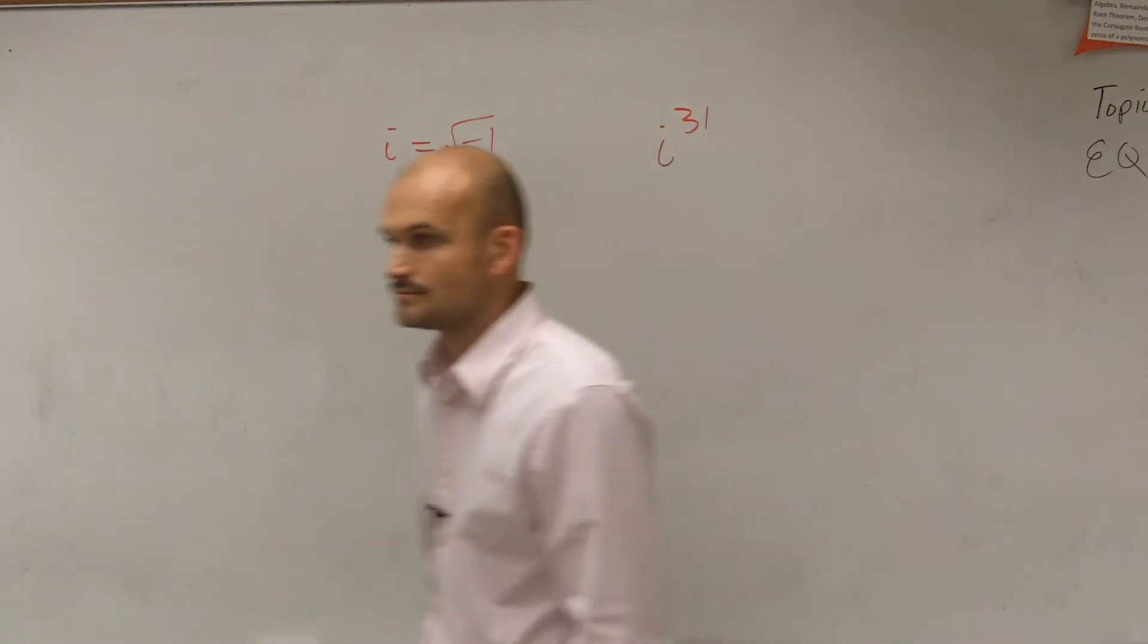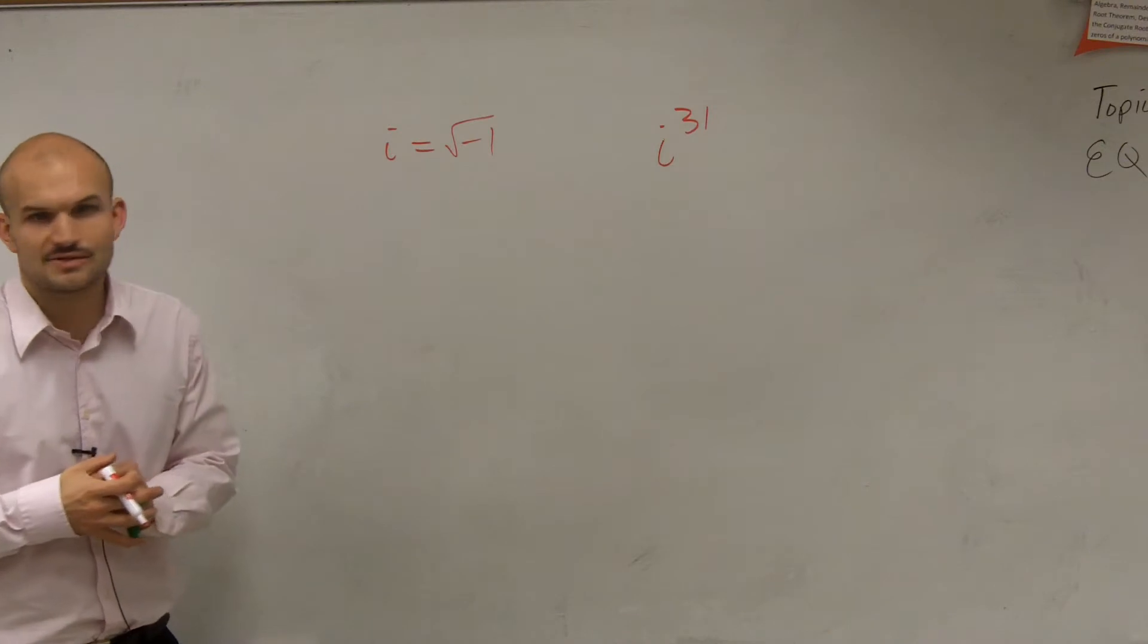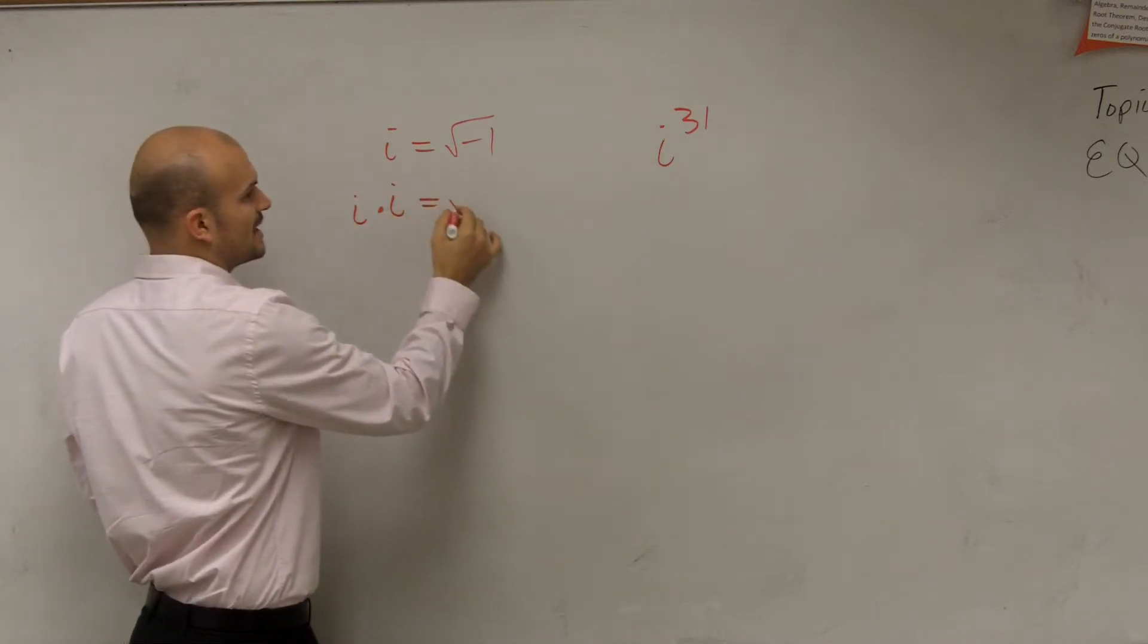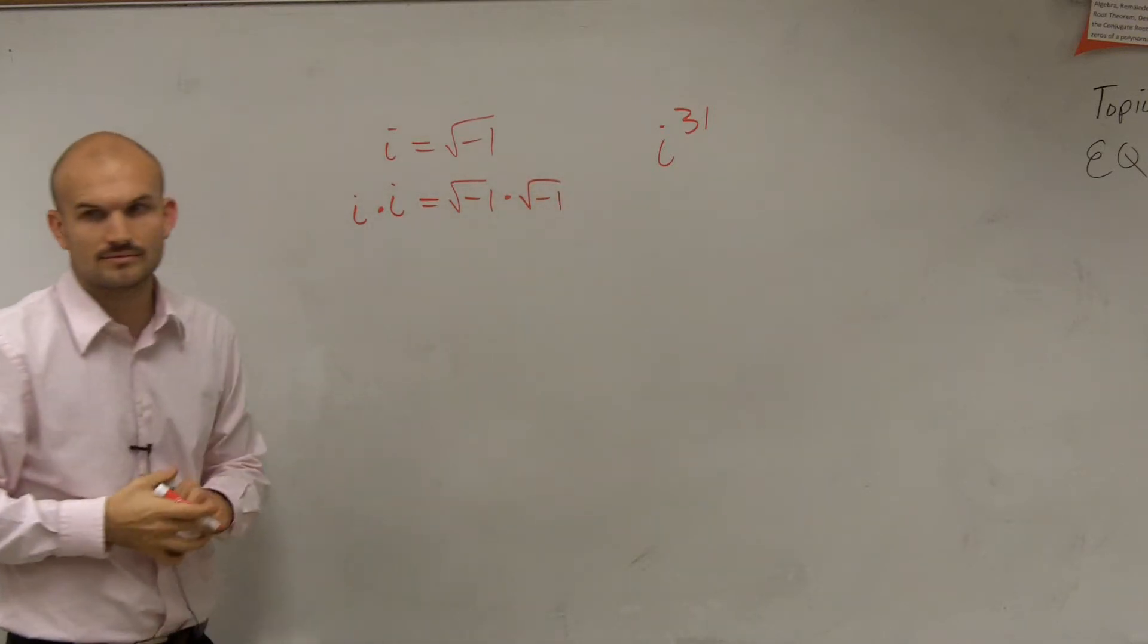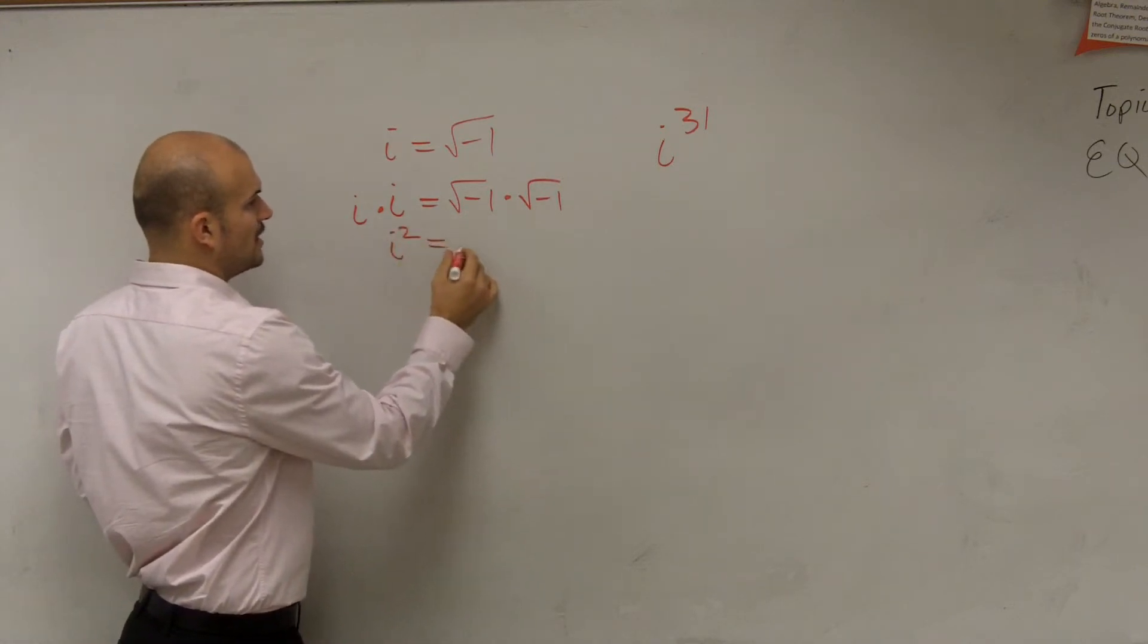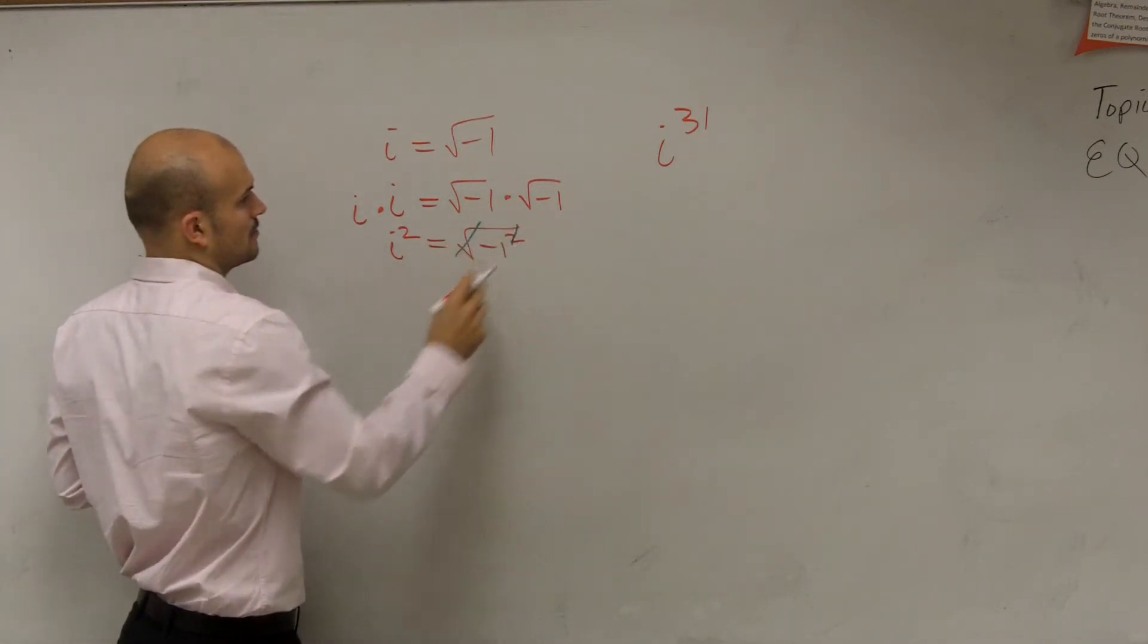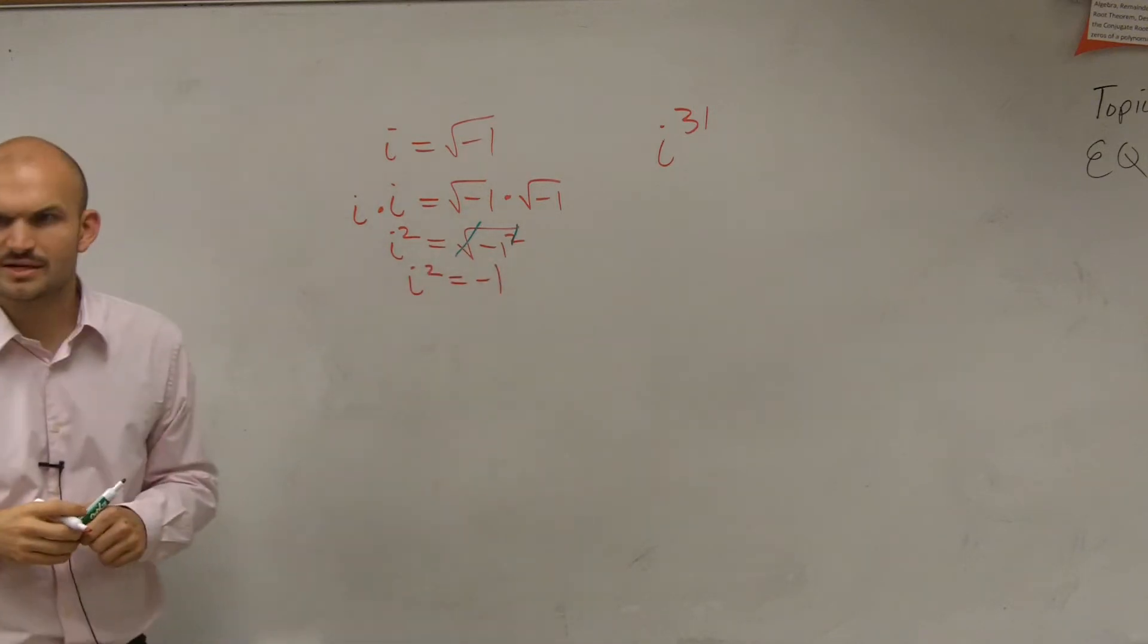All right, i squared. OK. So the first thing is, how do we even get to i squared anyways? Well, if I want to get to i squared, that means I'm going to multiply i times i, correct? Which means I can multiply square root of negative 1 times the square root of negative 1, right? Which essentially means I have i squared equals the square root of negative 1 squared. And the square root of something squared, so therefore, i squared equals negative 1. Does everybody see that?